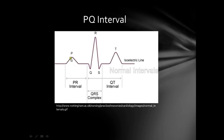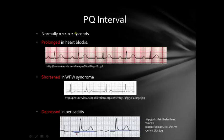The next thing after the P wave is the PQ interval. People commonly call it PR interval, but I prefer PQ interval because it goes from the P to the beginning of the Q wave — not to the tip, but to the beginning of the Q wave. From the beginning of the P wave to the beginning of the Q wave — this is the PQ interval. Normally it is 0.12 to 0.2 seconds, that's three to five small squares. It is prolonged typically in heart blocks — you can see here the P wave and Q are more than one large square apart, so this is a prolonged PQ interval.